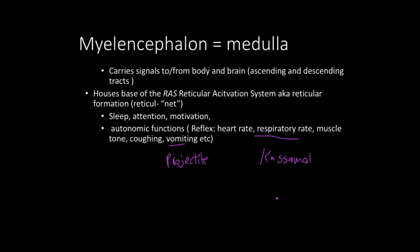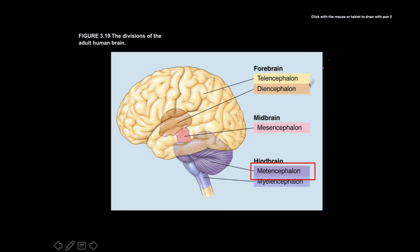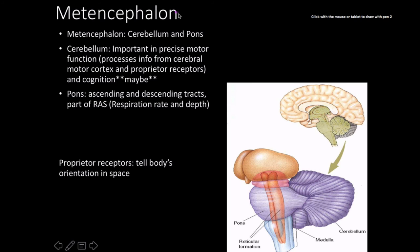Muscle tone is also regulated autonomically, including skeletal muscles. As I'm sitting here talking to you, I'm not consciously aware of the fact that there are muscles in my body that are slightly contracted at any given point — that's completely an autonomic function. Here's a picture showing the reticular formation, synonymous with reticular activation system, and the medulla located around this light blue region.